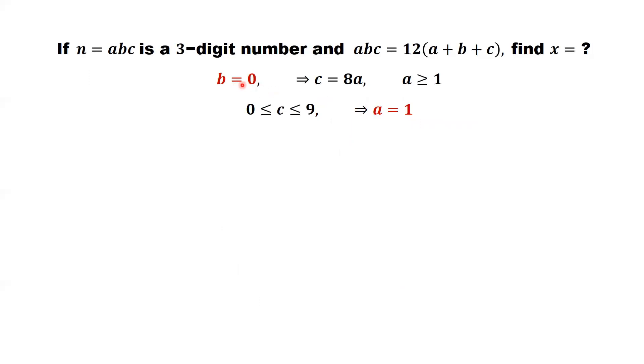We have b equals 0, a equals 1, c is 8 times a. Replace a by 1. We have c equals 8. We have three numbers here: a equals 1, b equals 0, c equals 8. So we have n here. n equals abc equals 108. So n equals 108. This is the answer.